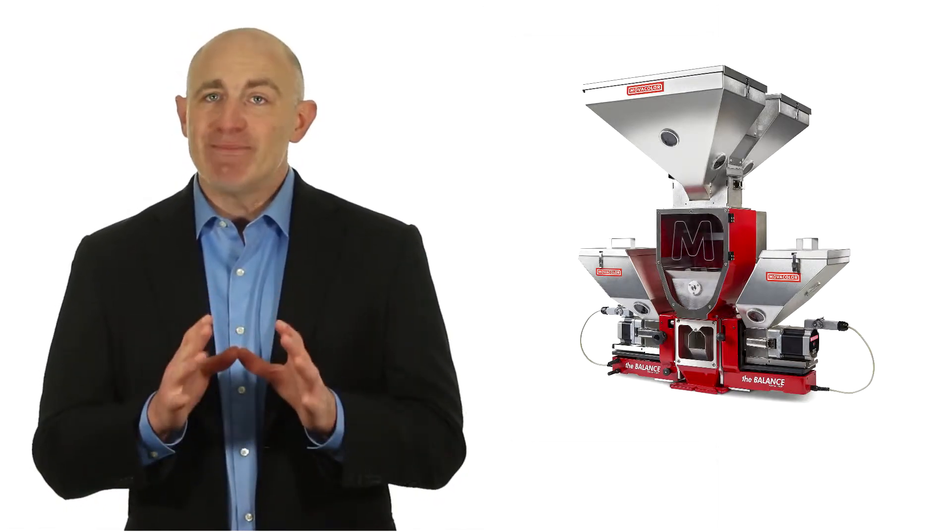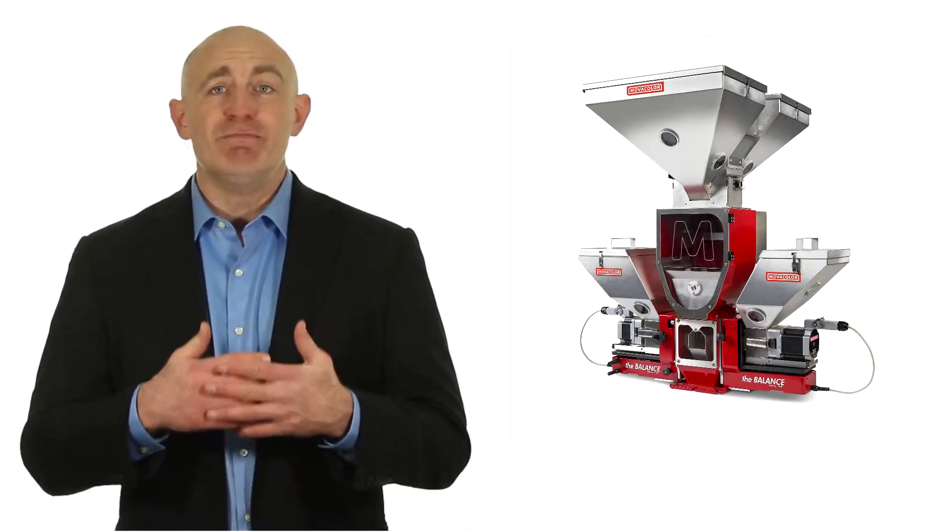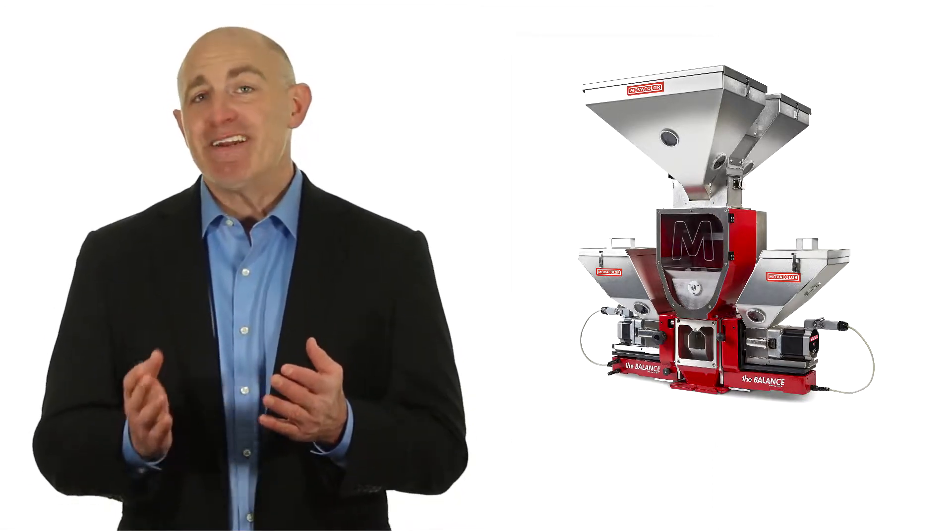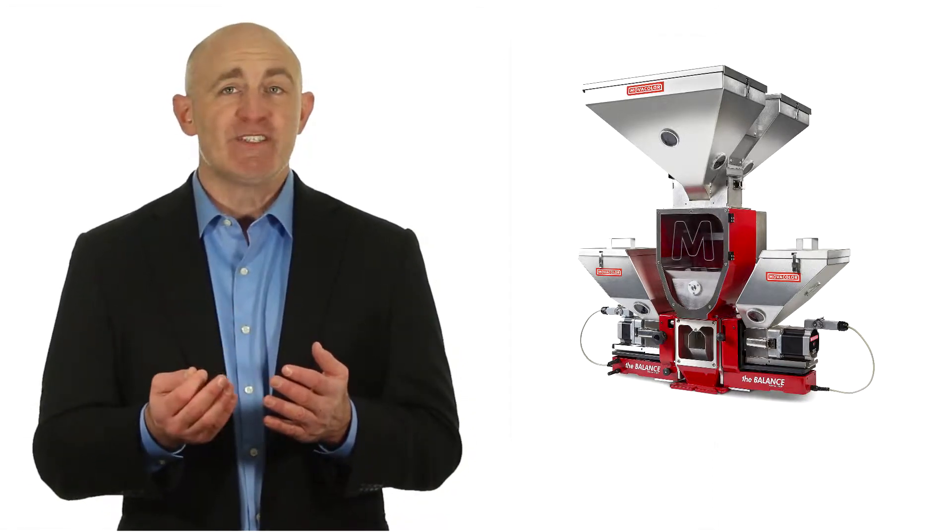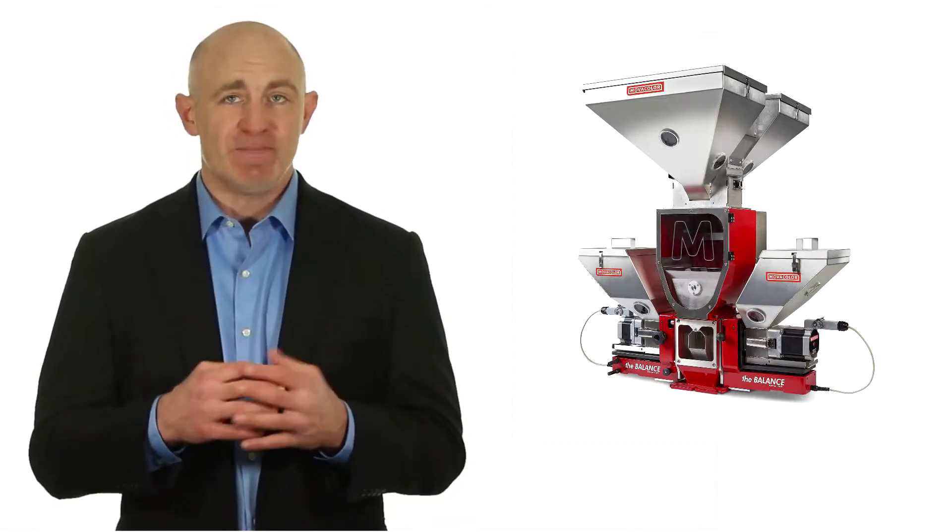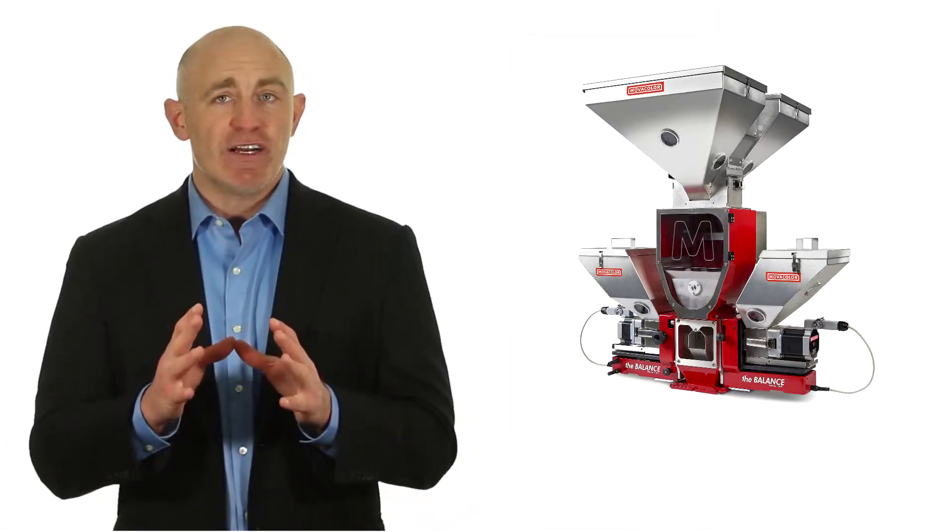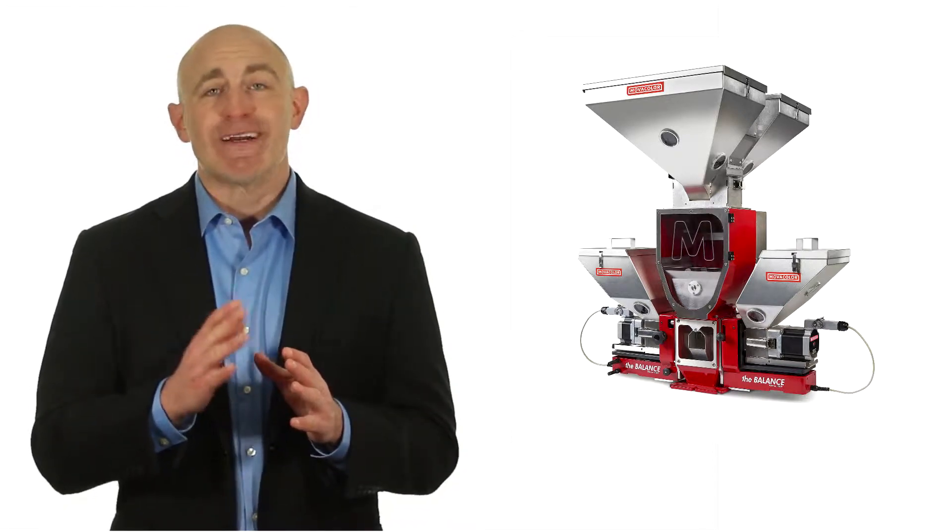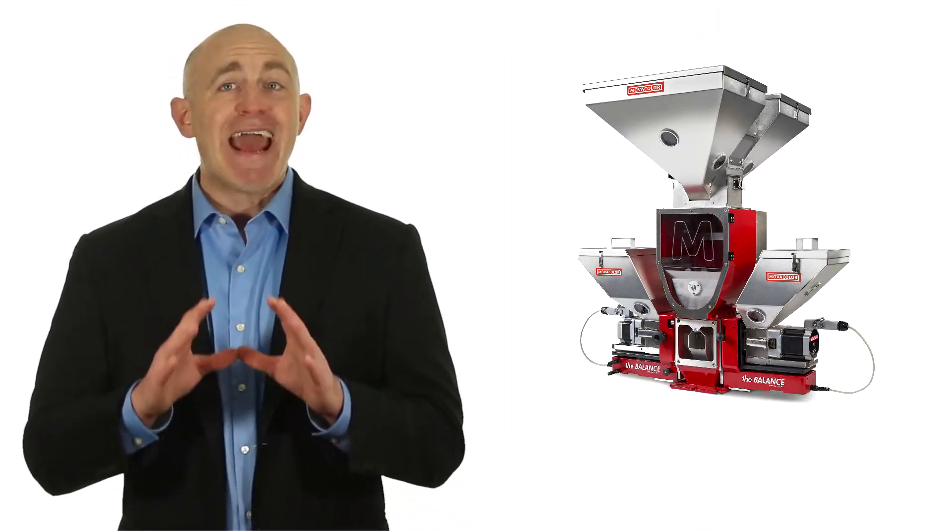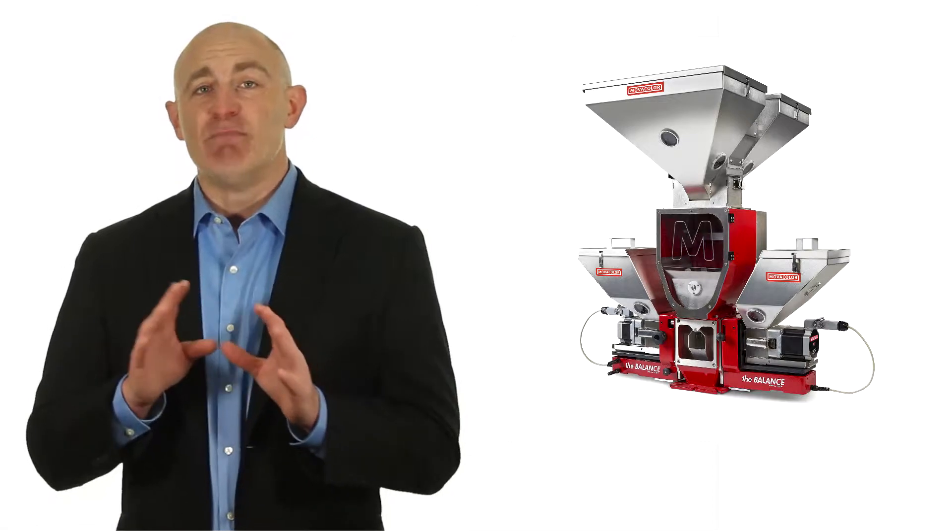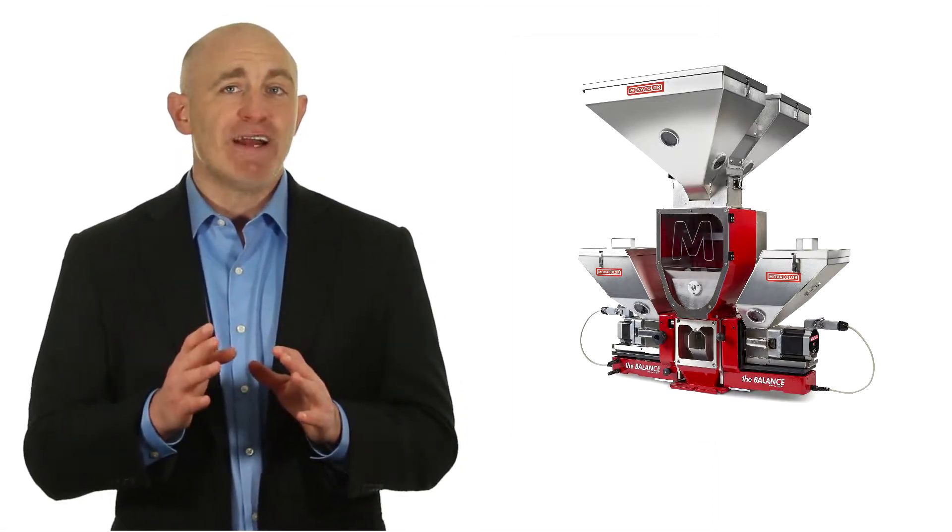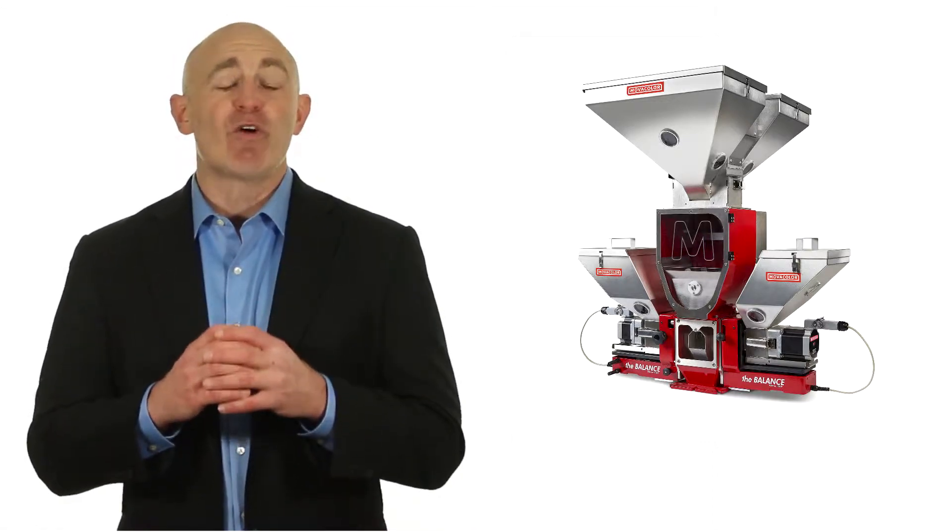You can mount the MC Hybrid over a dryer to mix regrind and virgin materials and then convey to one or more machines with color feeders to add the color. That will avoid any color separation that could occur in the dryer or during conveying. You can even have the MC Hybrid outside of the molding area mixing regrind and virgin material for one or more machines.